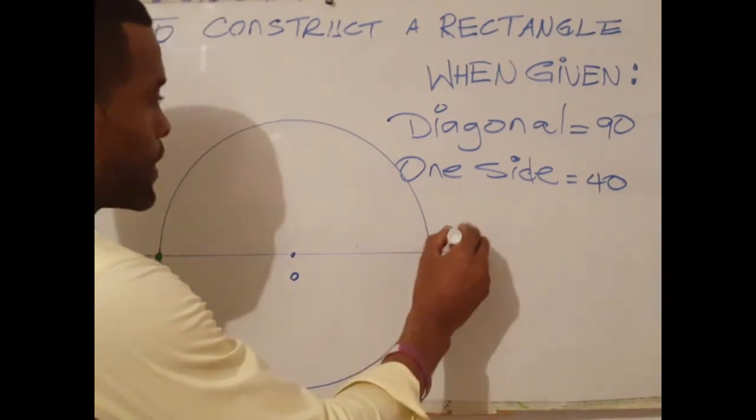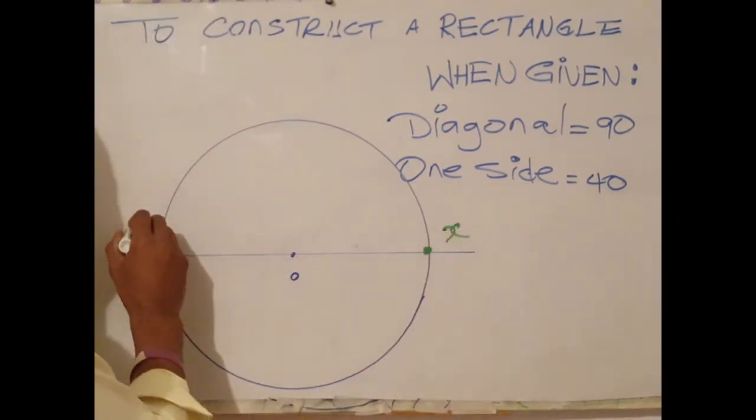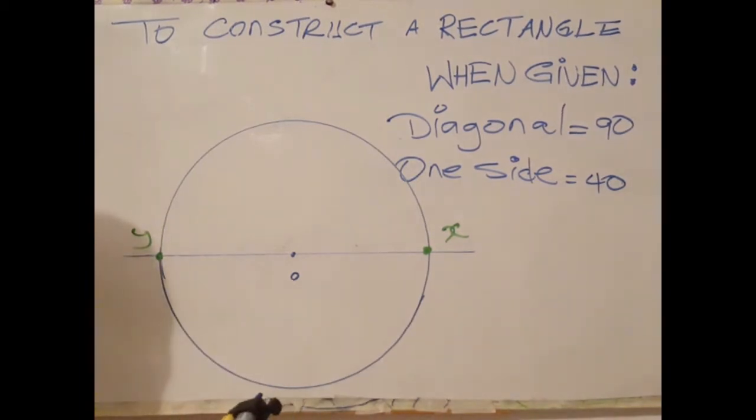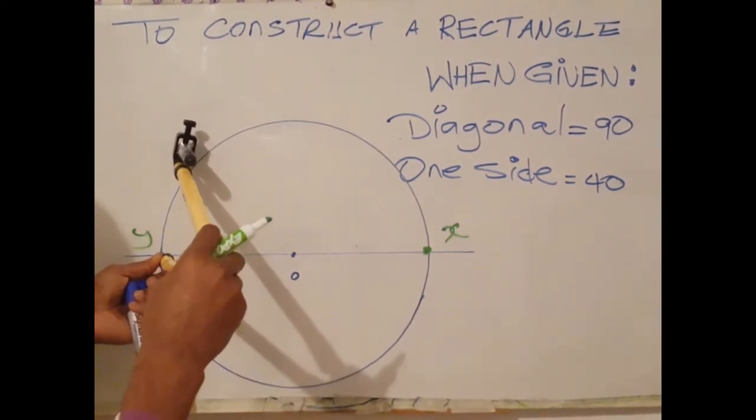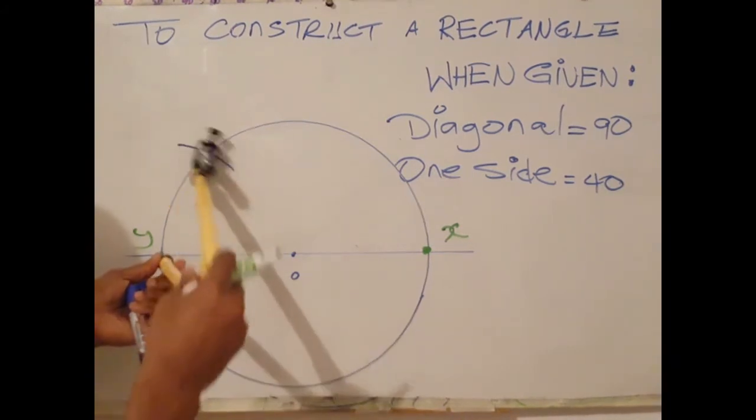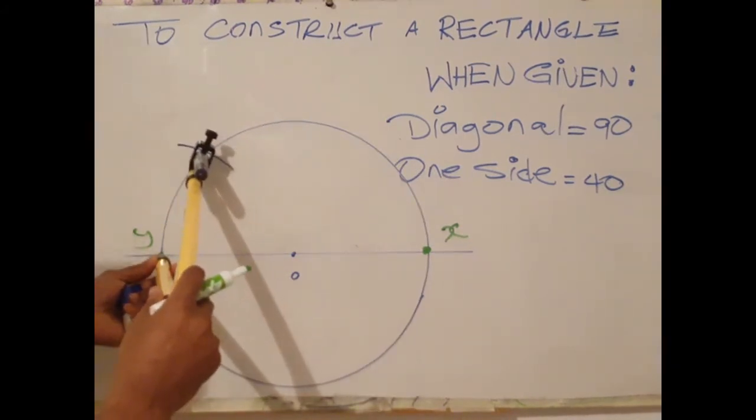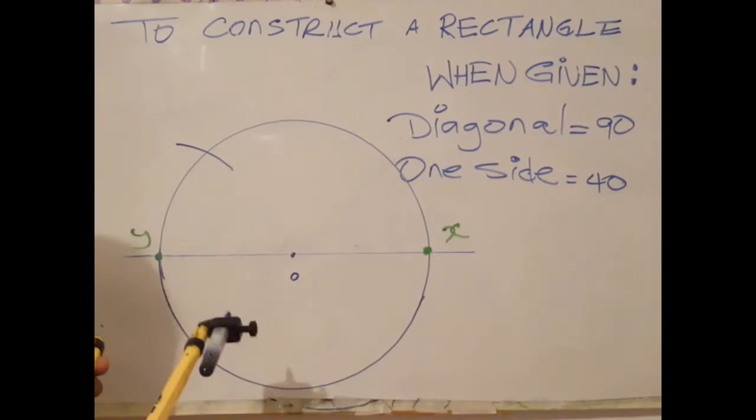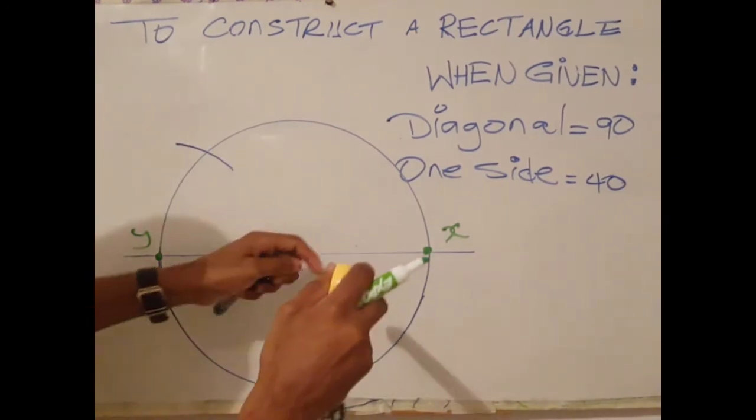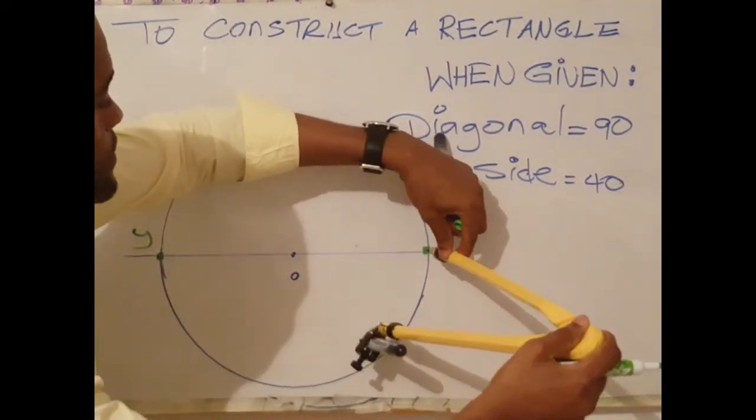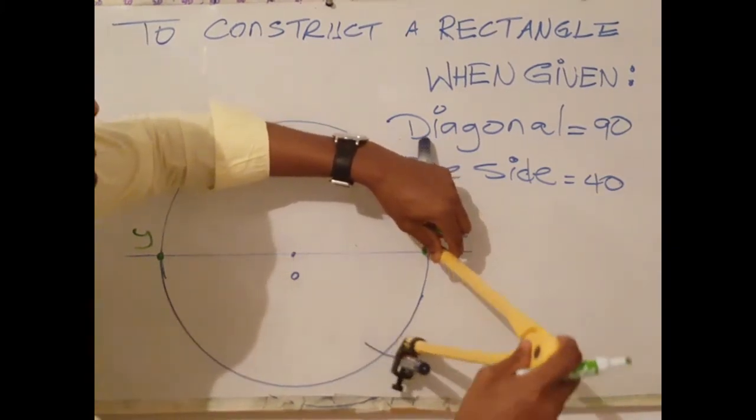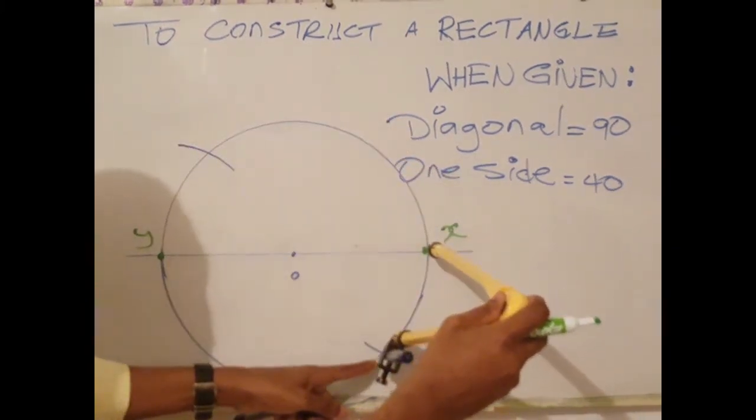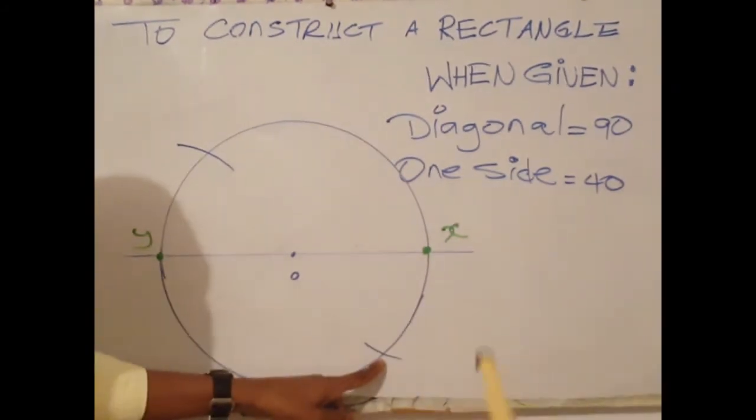Let's label these points X and Y. With point Y as center, describe an arc above to cut the circle. Next step is to go across to X with the same radius, describe an arc below XY line to cut the circle at this point.